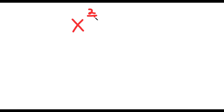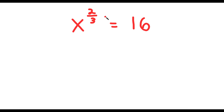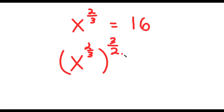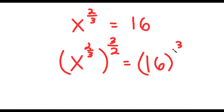In this video, I'm going to be solving the equation x to the power of 2 over 3 is equal to 16. To solve this, what I'm first going to do is take the power of 3 over 2 on both sides. So I get x to the power of 2 over 3 to the power of 3 over 2 is equal to 16 to the power of 3 over 2.